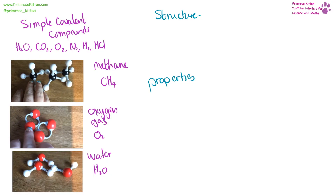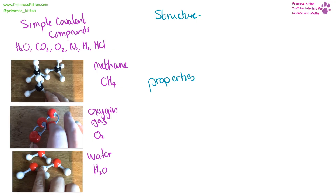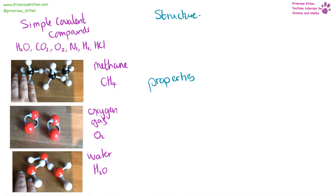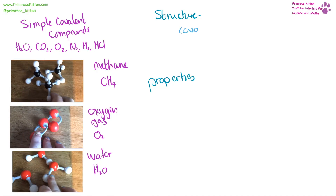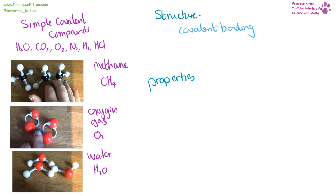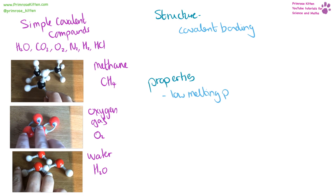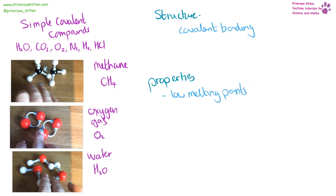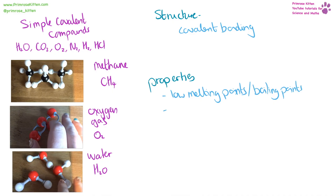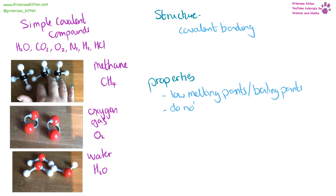For simple covalent compounds — such as water, carbon dioxide, oxygen, nitrogen, hydrogen gas, hydrochloric acid, or methane — they are very small structures with covalent bonding. Their properties are low melting points, and they are generally a gas or liquid at room temperature. They do not conduct electricity.